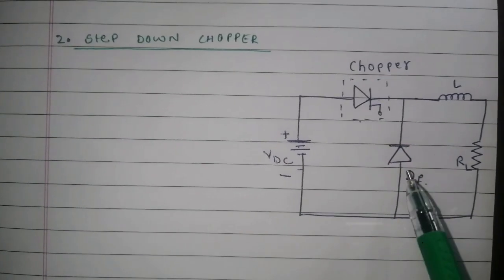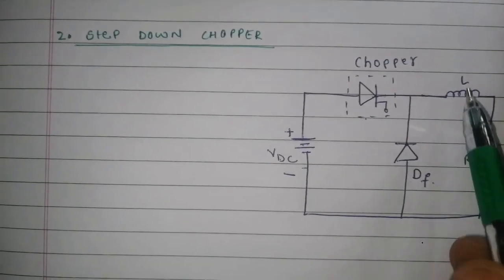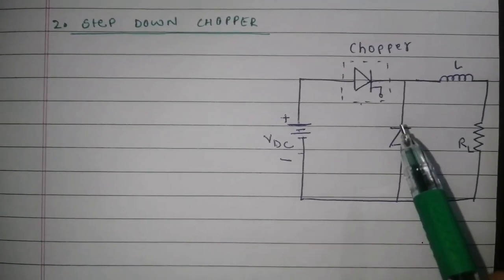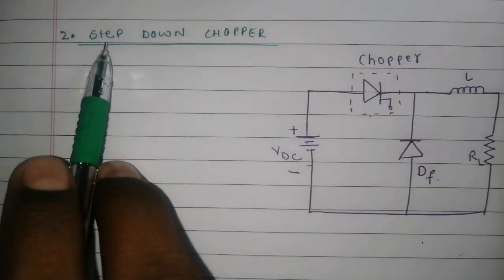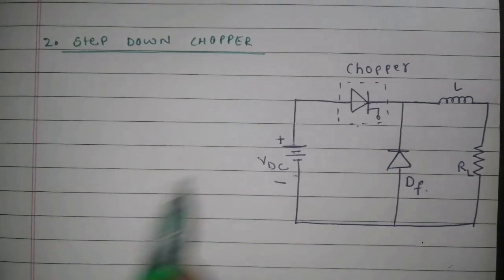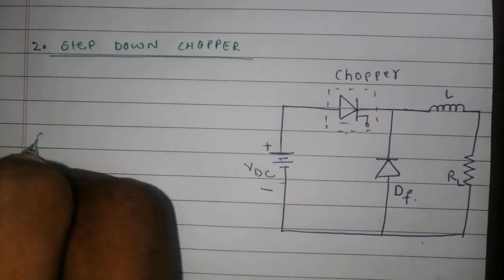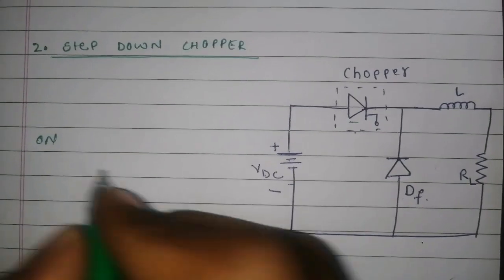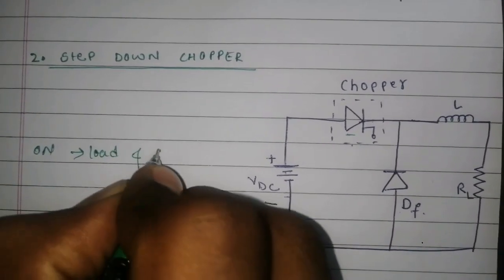This is the circuit of step-down chopper. With the help of this circuit, we can easily understand the operation of step-down chopper. When the chopper is on, it connects the load and supply.